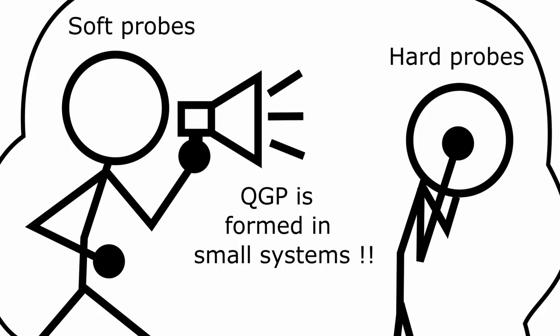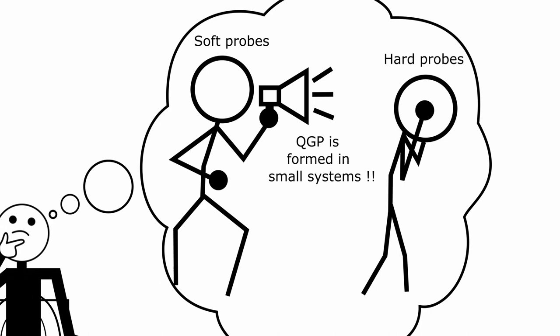This started a lot of new discussions, in which people argued that in these smaller systems, tiny droplets of quark-gluon plasma can indeed be formed, and therefore explain all the fluid-like behavior we see in the results. However, for this view to be possible, we should also be able to see quenching effects. And so far, we have not.